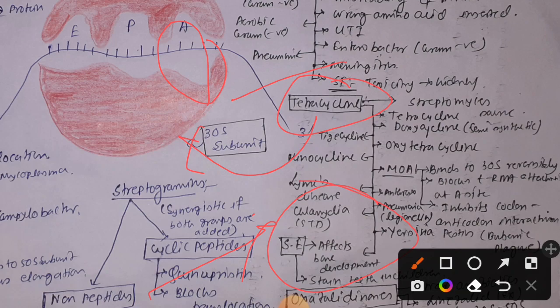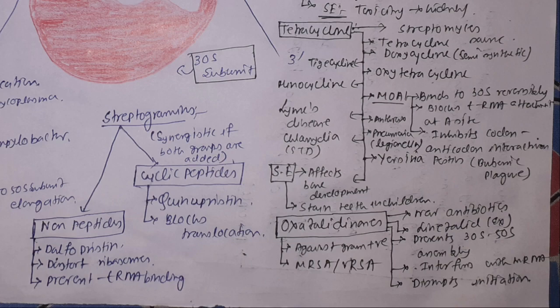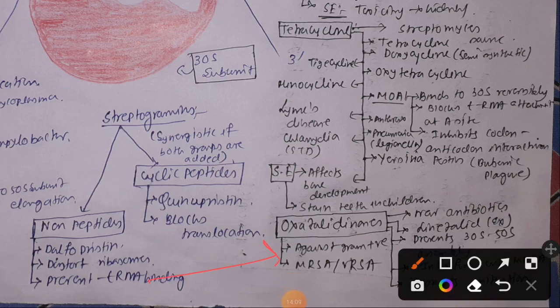Side effects of tetracycline include impaired bone development and dental staining in children. The last 30S subunit inhibitor is oxazolidinone, a newly introduced antibiotic. The example is linezolid. Oxazolidinone prevents 50S-30S subunit assembly, disrupts initiation, and also interferes with mRNA. It is used for gram-positive bacterial infections and for MRSA and VRSA treatment — MRSA meaning methicillin-resistant Staphylococcus aureus.